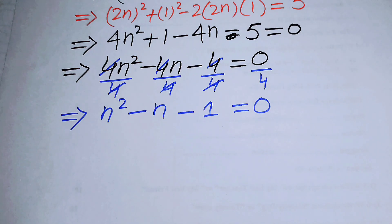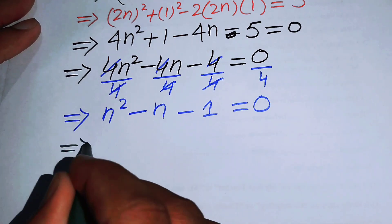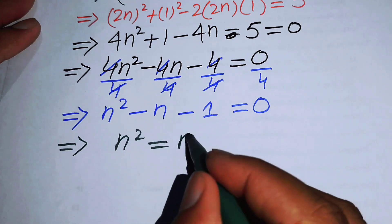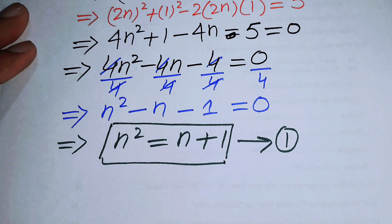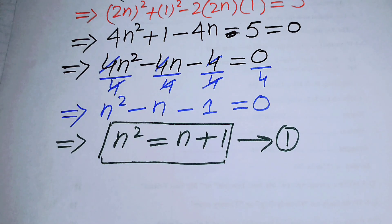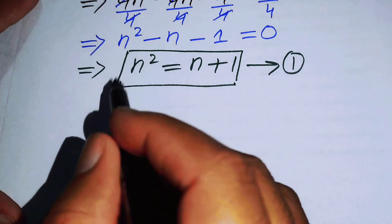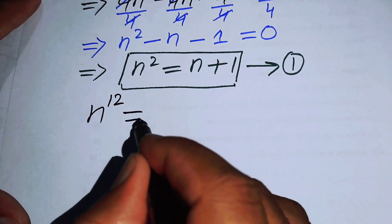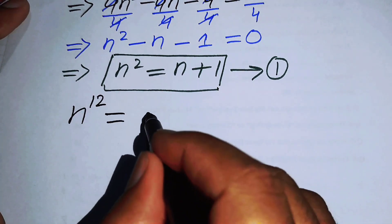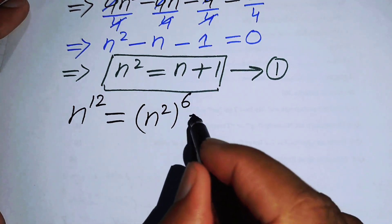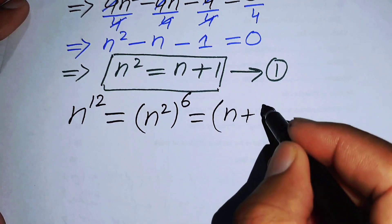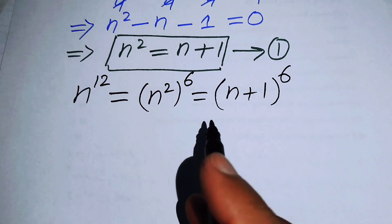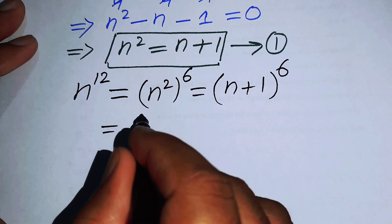Rearranging, we move −n and −1 to the right hand side and get n² equals n plus 1. We label this as equation number 1 because we will need this identity going forward. Our claim is to find the value of n to the power of 12, so we rewrite n^12 as (n²)^6.